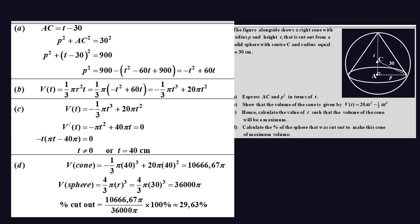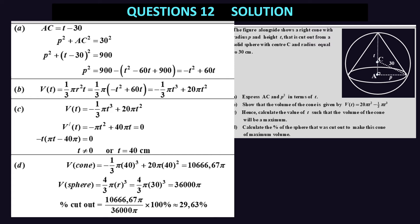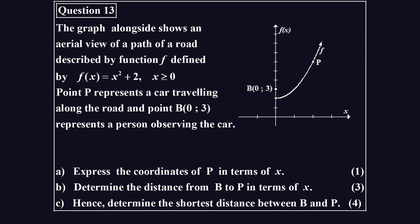One note as a reminder: any question to do with cones and spheres, the formula will always be provided to you. So in question 12, the formula for the cone and sphere will be provided, you don't have to memorize that. But any other shapes like cylinders, right prisms, and areas of triangles, those formulas you need to know.